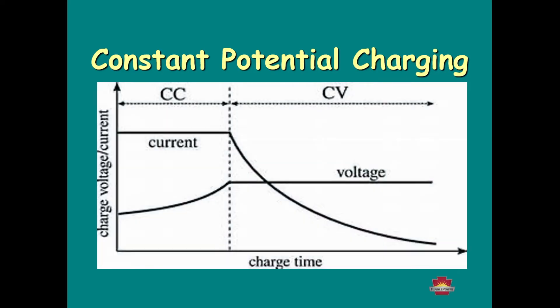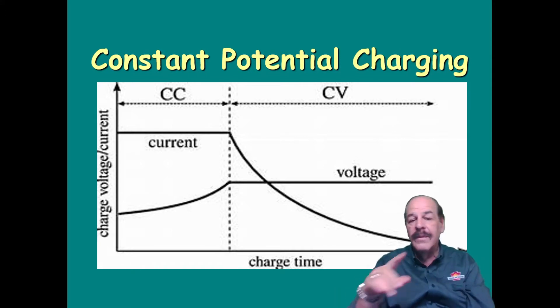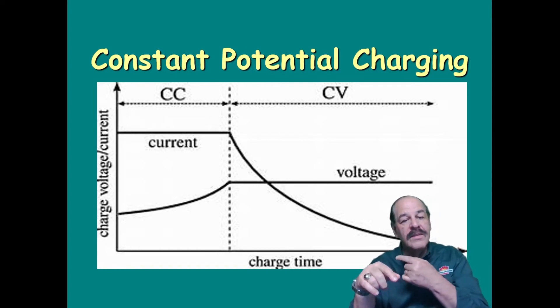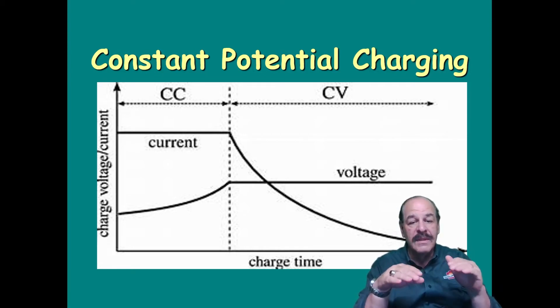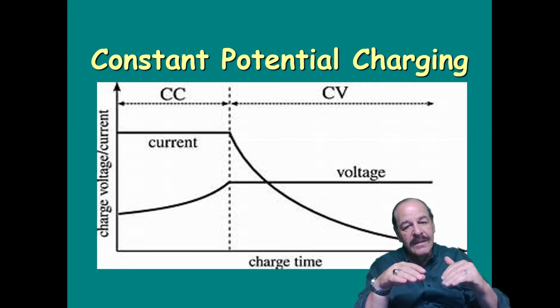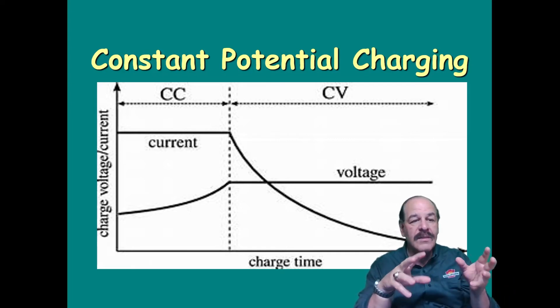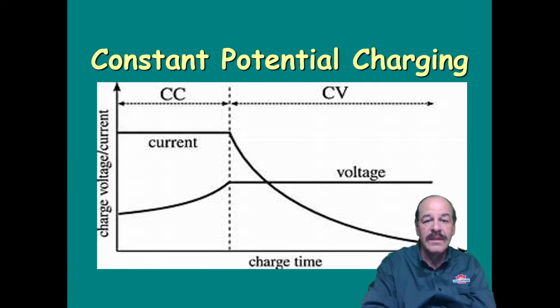Today, just about every stationary system uses constant potential charging, whether in utilities, petrochemical plants, oil and gas, or even transportation. This graph is a simple explanation of what happens when you're doing constant potential charging. If you look at this graph, as the current goes up, the voltage will start to rise. Then you reach this certain area where the voltage is right where you want it and the current can taper down. That's really very simply how constant potential charging works.